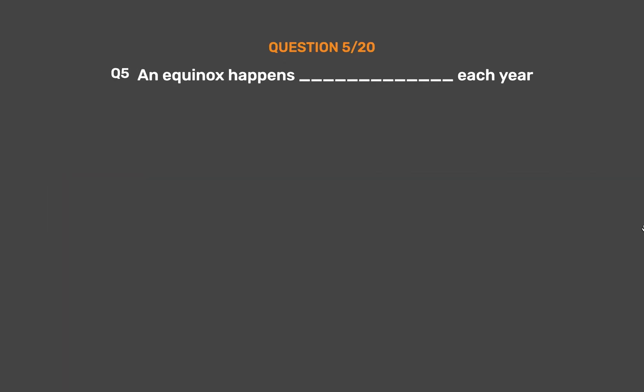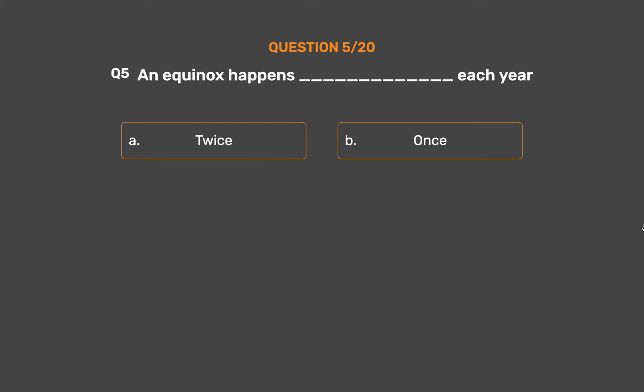Question number 5. An equinox happens underscore each year. Option A: Twice. Option B: Once. Option C: Thrice. Option D: Four times.